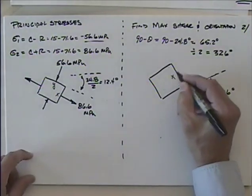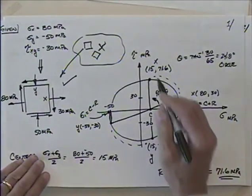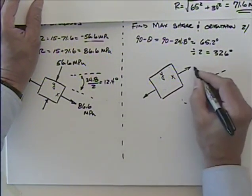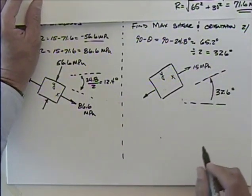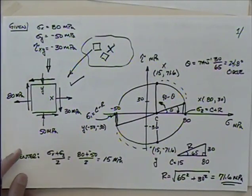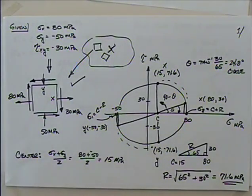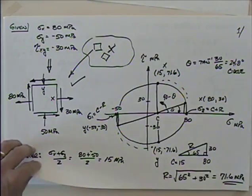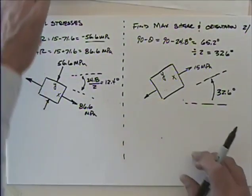On the x-face and y-face, I just go to the circle. The x-face has 15 in the normal direction — positive 15, that's 15 megapascals. That's the rule when going from Mohr's circle to the element. The one key rule is you always divide the angle by 2. The shear stress is positive at 71.6 megapascals.